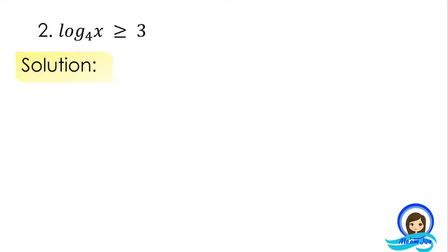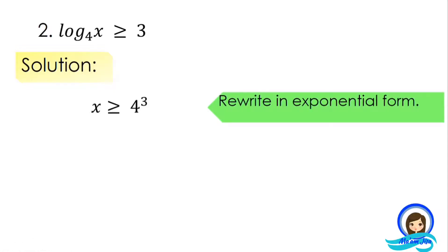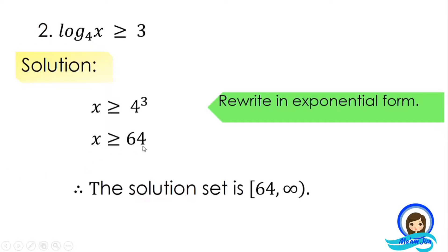Let's move on to the second example: logarithm of x to base 4 is greater than or equal to 3. Using the same process, we rewrite it to its equivalent exponential form. Our base is 4 and the logarithm value of 3 becomes the exponent, giving us 4 cubed. 4 cubed means 4 × 4 × 4, which is 64. So x is greater than or equal to 64. Therefore, the solution set is from 64 to positive infinity, using a bracket since 64 is included.